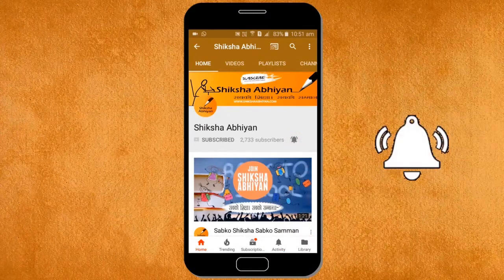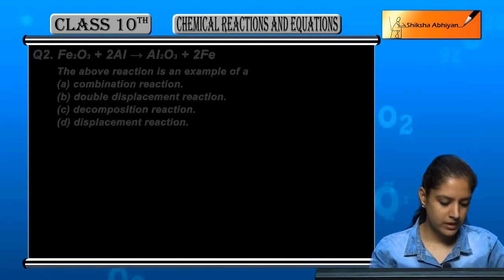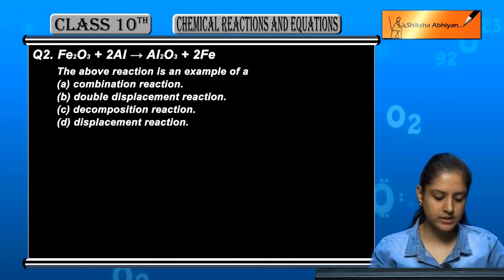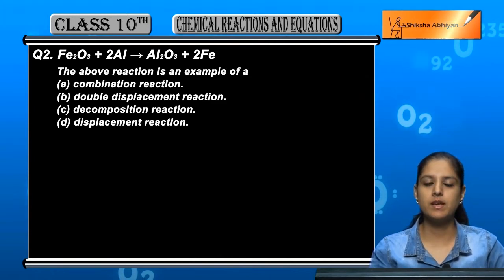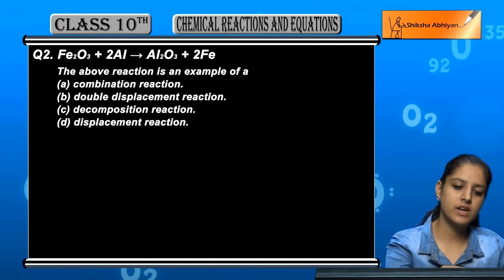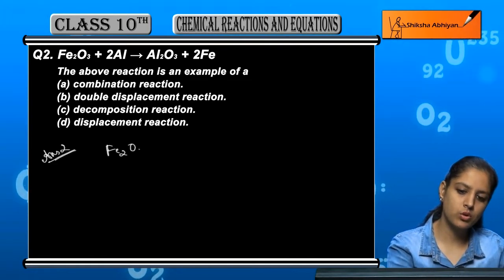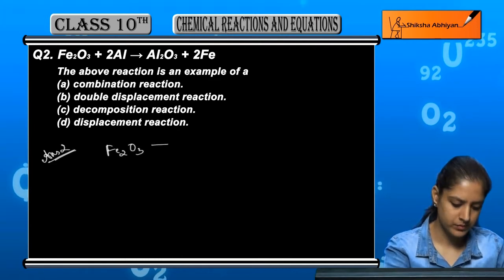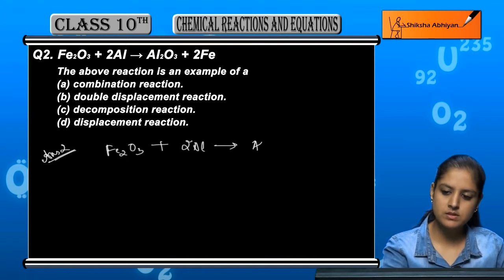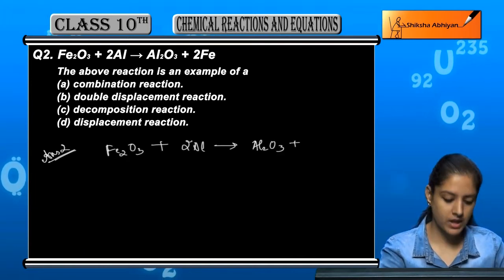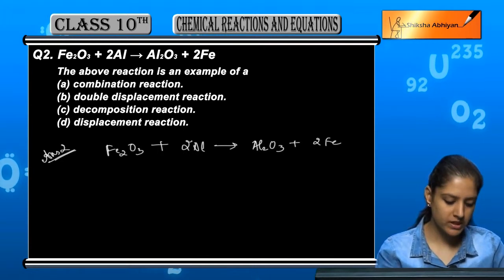Now the second question is Fe2O3 plus 2Al gives us Al2O3 plus 2Fe. So let us write the reaction first: we have Fe2O3 iron oxide plus aluminium gives us Al2O3 aluminium oxide plus iron.